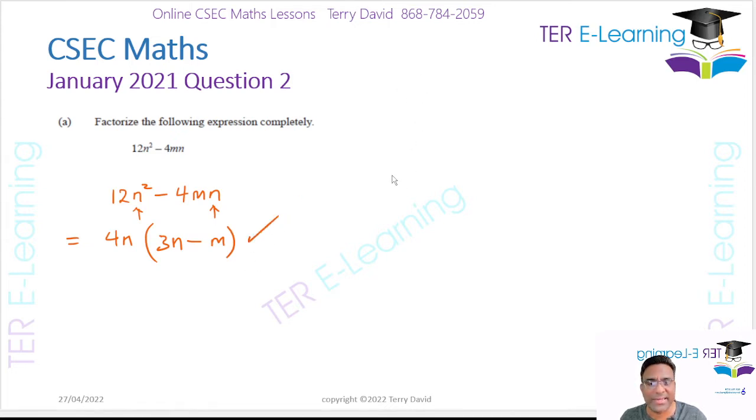Now, when it comes to factorizing, you can easily double check your answer. So if I were to remove the brackets, I should get back my original expression here. So if I use my distributive law, 4n by 3n is going to give me 12n², and then I have to say 4n by minus m, that's going to give me minus 4mn. So it's 12n² minus 4mn. So that's what it is. So that's correct.